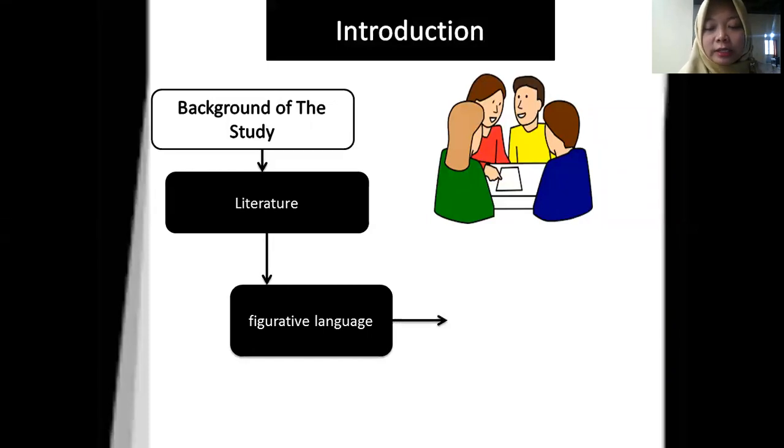There are many kinds of figurative language that are usually used by authors when writing stories, like hyperbole, metaphor, irony, personification, and simile. Irony itself is one of the figurative language that is often found in literature because irony is a figurative language that allows readers to observe the mismatch between what the character thinks or will happen and the reality.